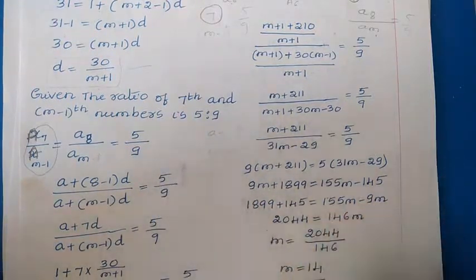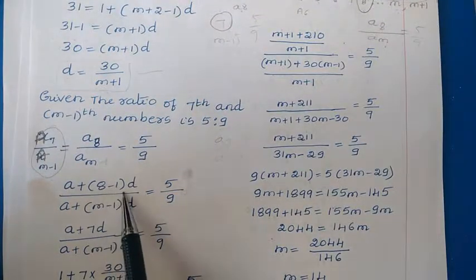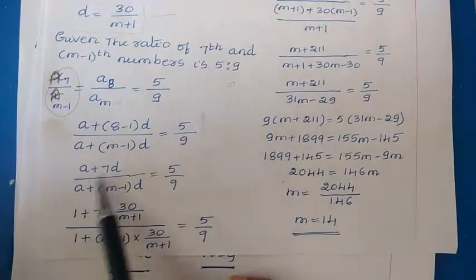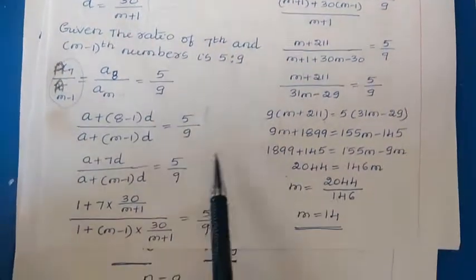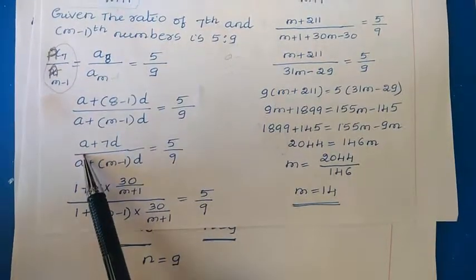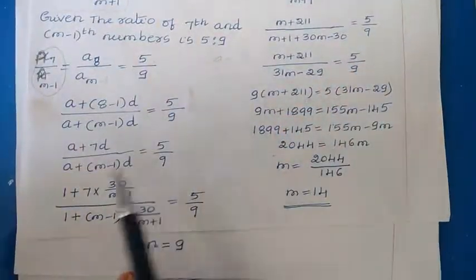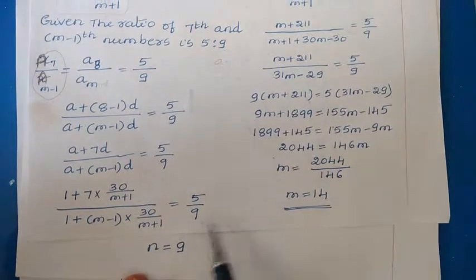Using AN = A + (N−1)D: A8 = A + 7D and AM = A + (M−1)D. So the ratio is [A + 7D] / [A + (M−1)D] = 5/9. Substituting A = 1 and D = 30/(M+1), we get [1 + 7×(30/(M+1))] / [1 + (M−1)×(30/(M+1))] = 5/9.